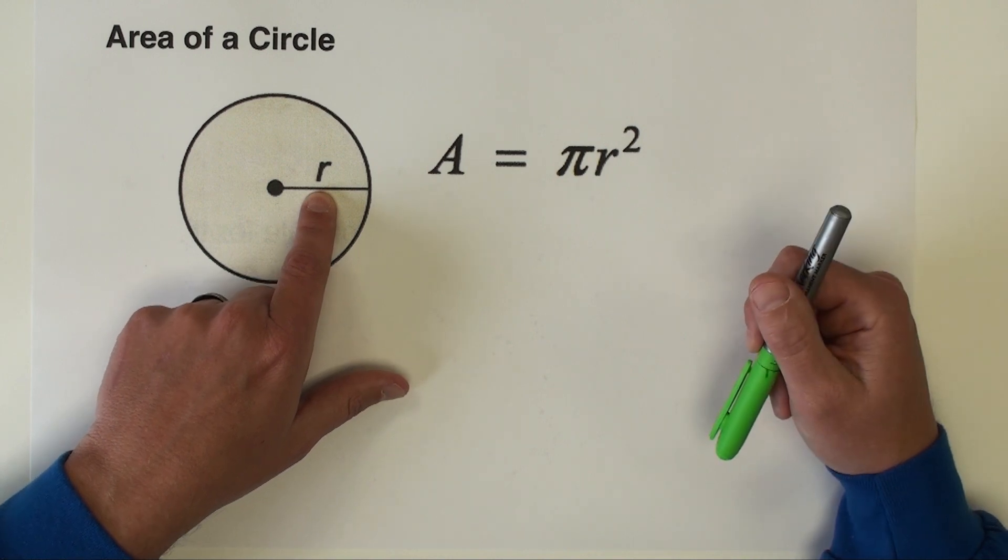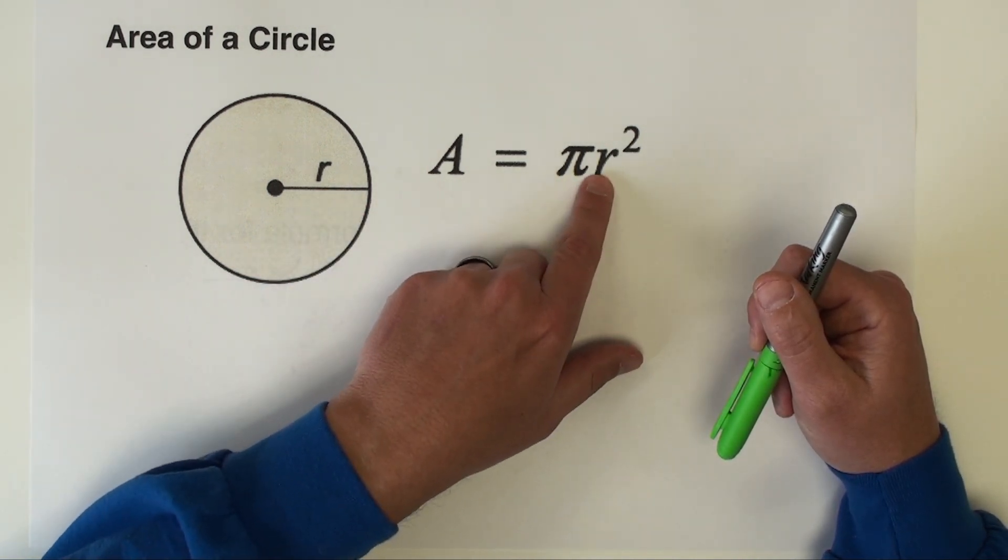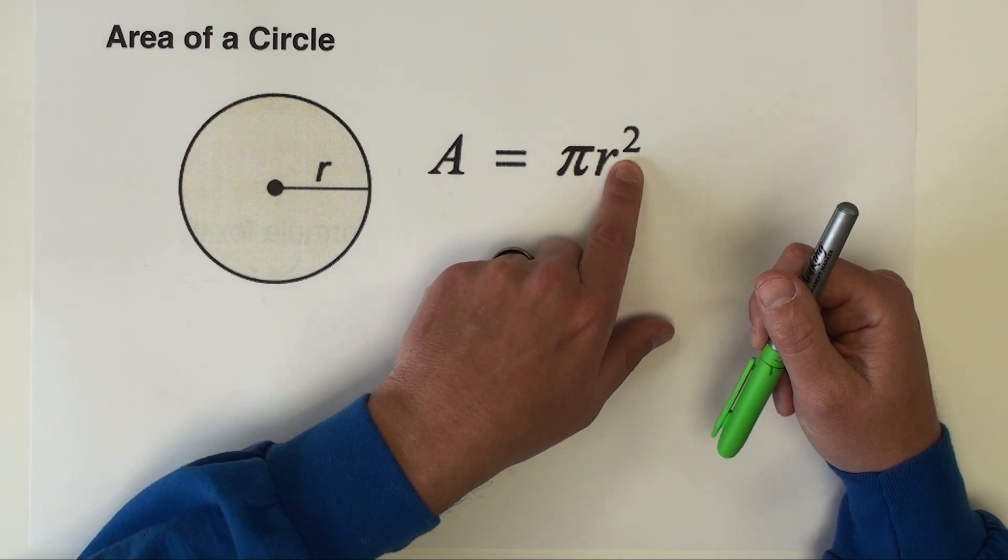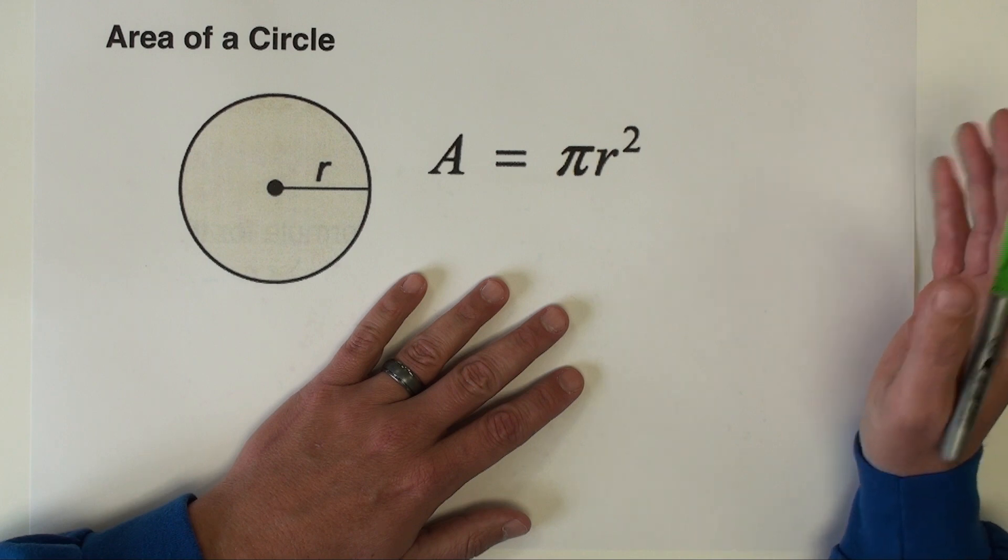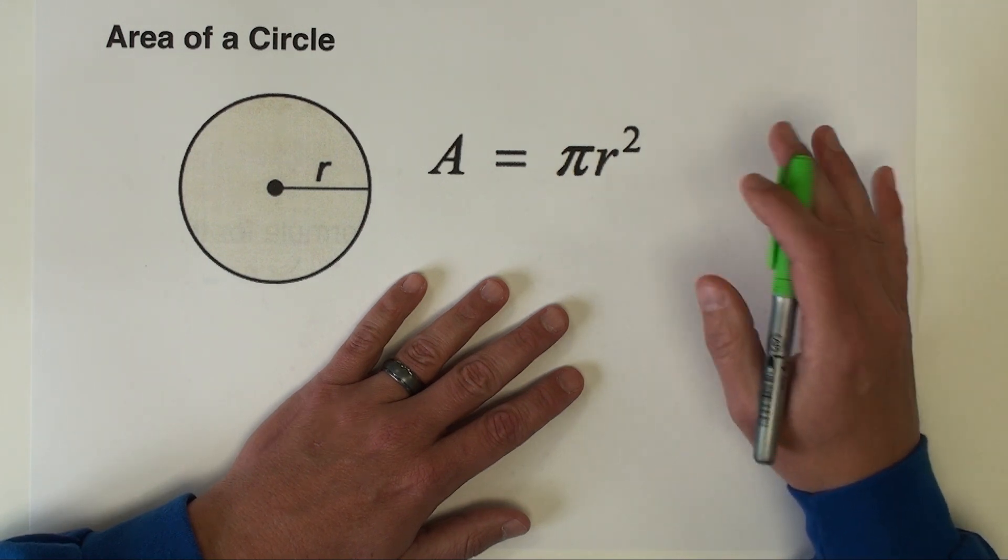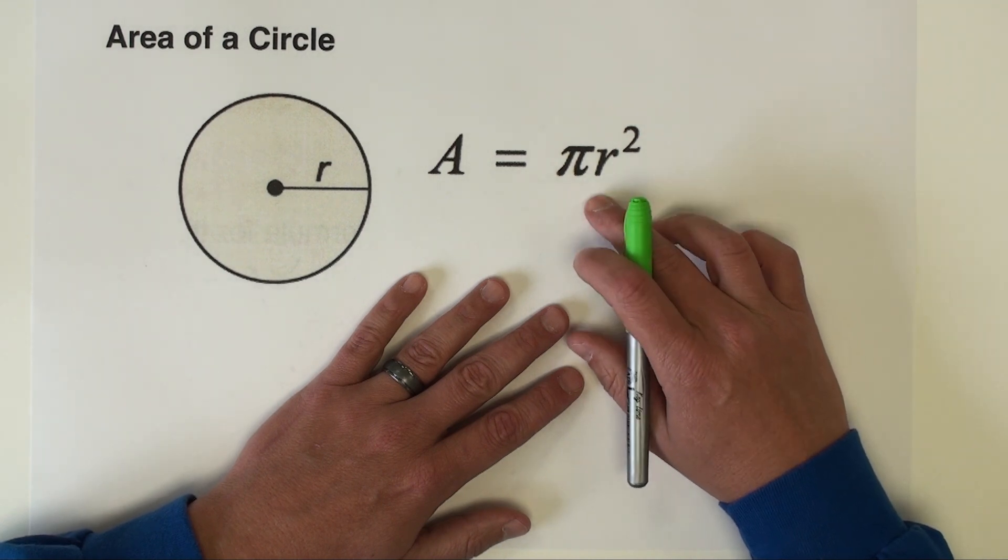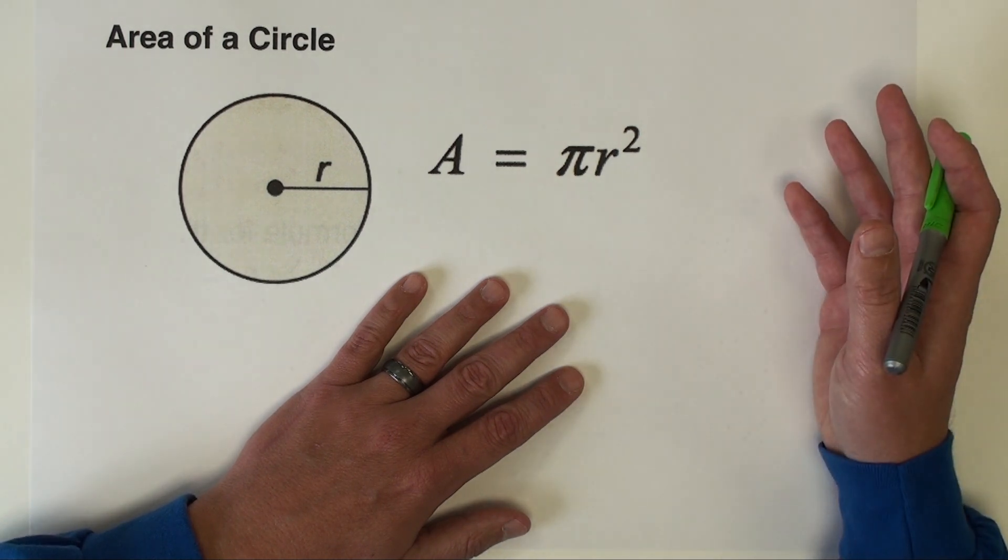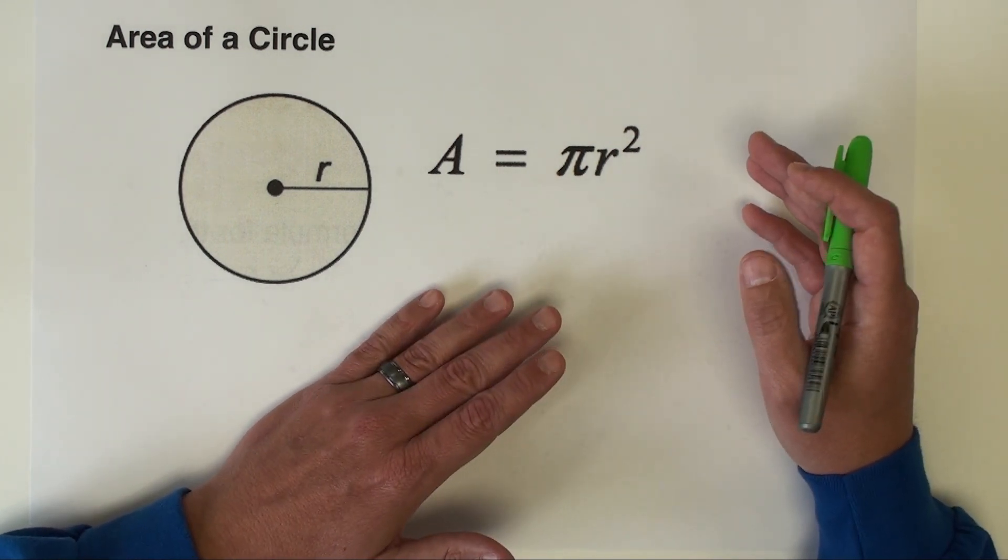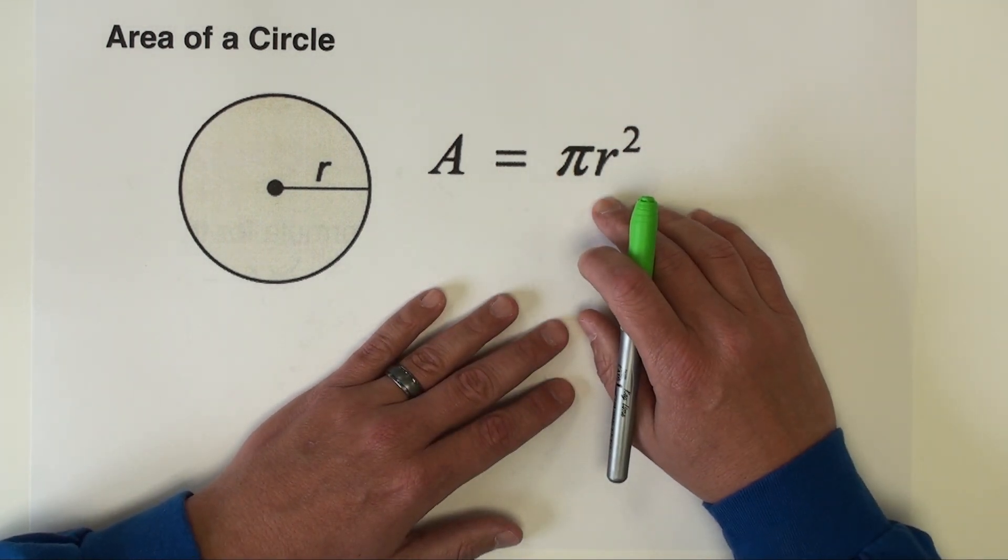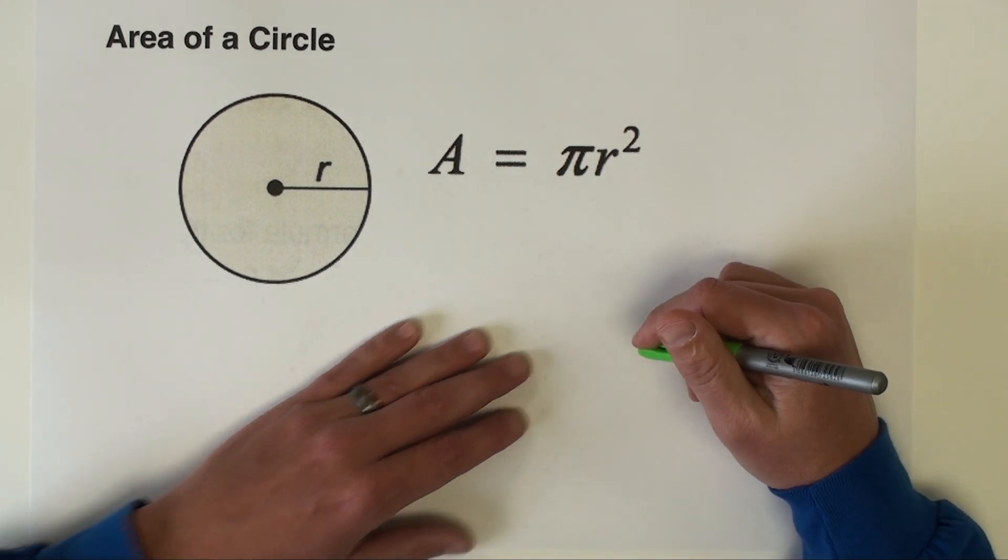So here we have a circle, there's only one measurement that we're interested in and that's the radius right here. Our area formula is written in terms of that radius, and it is that the area is equal to pi times the radius squared. There is no formula that we're going to use for diameter. Quite simply, if you're given diameter, it's much easier to just convert that to radius and use this formula. Let's see a couple of example problems with this area formula to get us started.